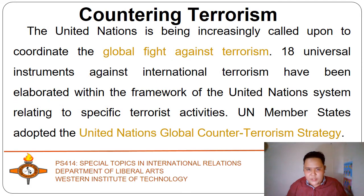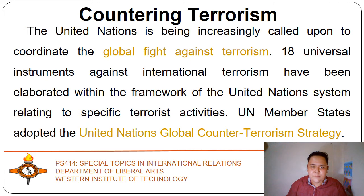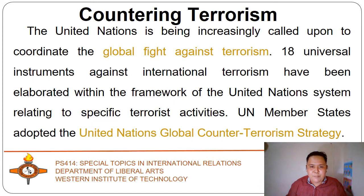The United Nations is being increasingly called upon to coordinate the global fight against terrorism. Eighteen universal instruments against international terrorism have been elaborated within the framework of the United Nations system. In September 2006, UN member states adopted the United Nations Global Counter-Terrorism Strategy — the first time that member states agreed to a common strategic and operational framework against terrorism.